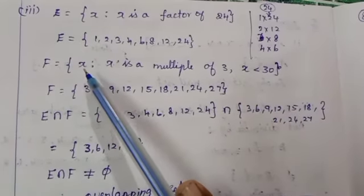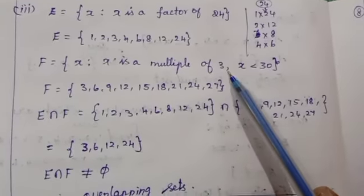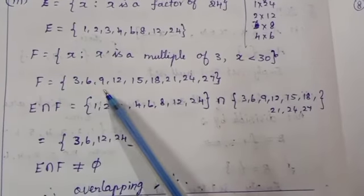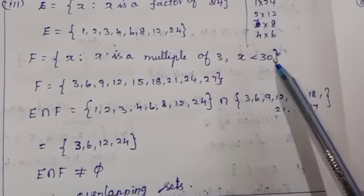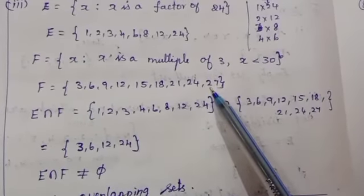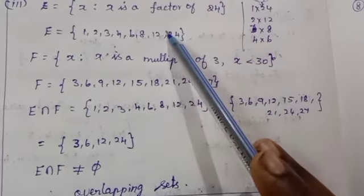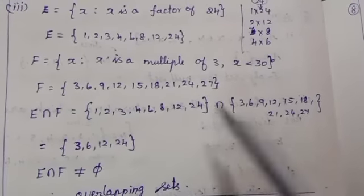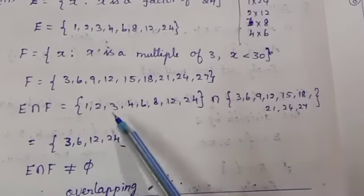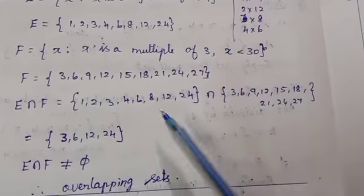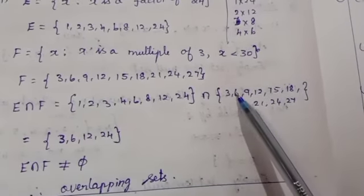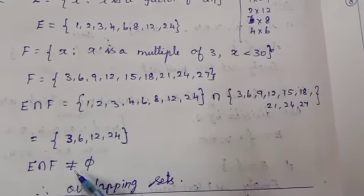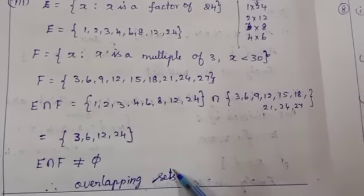F is equal to set of all X such that X is a multiple of 3, and X less than 30. Multiples of 3: 3, 6, 9, 12... take from the 3-times table, below 30. Now find E intersection F — common elements of these two sets. Common elements are 3, 6, 12, 24. So E intersection F is not equal to empty set. So these are overlapping sets.